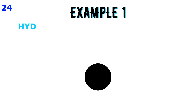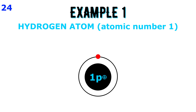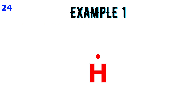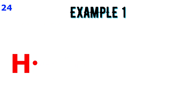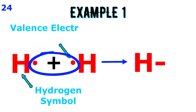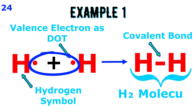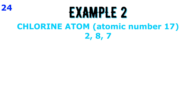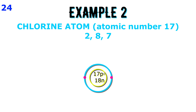Hydrogen: A hydrogen atom has one electron in its first shell, which is also the outermost shell. In order to complete its duplet and attain the configuration of helium, it shares one electron with another atom of hydrogen and forms a covalent molecule. One pair of shared electrons is shown by a single line and is called a single covalent bond.